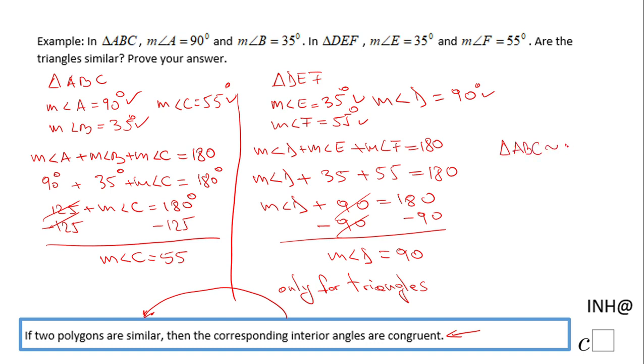Triangle ABC is similar to triangle DEF. You have to be careful here—you need to write the corresponding angles correctly, so for A the corresponding angle is D, for B it's E, and for C it's F.